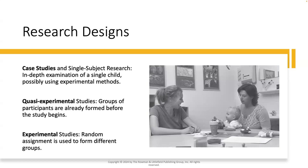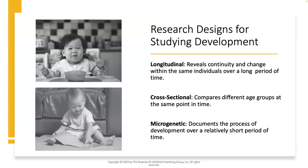With these three different research designs, I invite you to ponder the question of which design would you choose for your research and why? Now, there are research designs for studying development: longitudinal, cross-sectional, and microgenetic. Longitudinal reveals continuity and change within the same individuals over a long period of time. That movie — I believe it's called Boyhood — where they follow little boys through adolescence and adulthood, would be an example of longitudinal, at least in terms of observations.